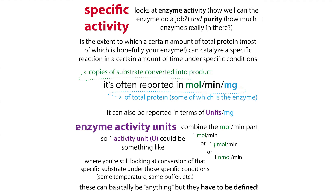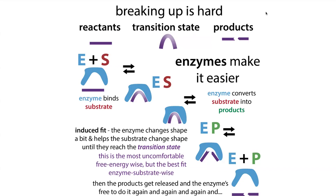So let's dive in. We have a situation where the enzyme finds a substrate and you get this enzyme-substrate complex. The enzyme then transforms that into an enzyme-product complex — basically it takes the substrate, makes it into product, holds on to that product, and then lets the product go.